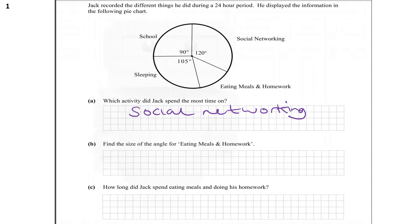Find the size of the angle for eating meals and homework. So this angle here, the measurement of that angle is missing. We know all the angles together will add up to 360. So 90 plus 120 degrees plus 105 degrees is equal to 315 degrees. So 360 degrees minus 315 degrees equals 45 degrees. The measurement of that angle there is 45 degrees.